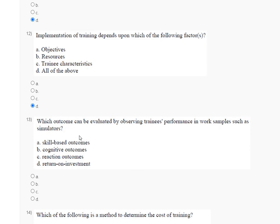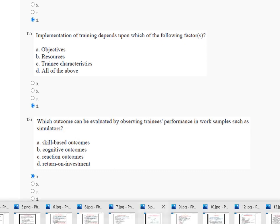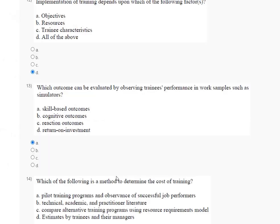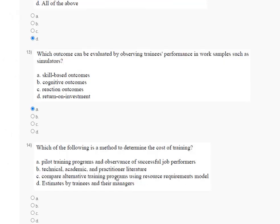Question number 13: which of the following can be evaluated by observing training performance in a work sample such as a simulator? The correct answer is Option A — skill-based outcomes. The explanation of question number 13 is here. Question number 14: which of the following is a method to determine the cost of training?